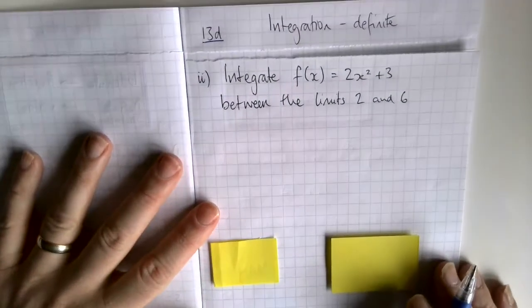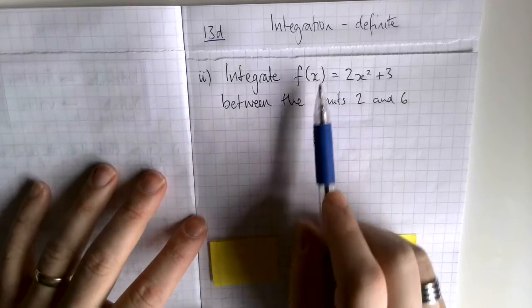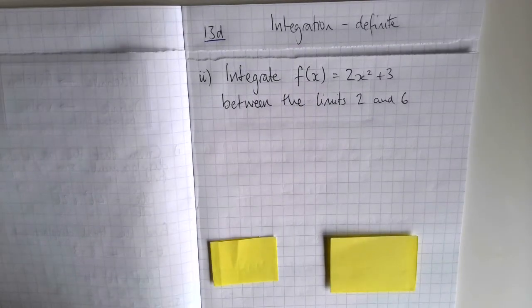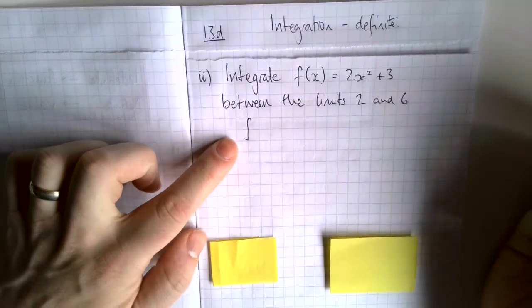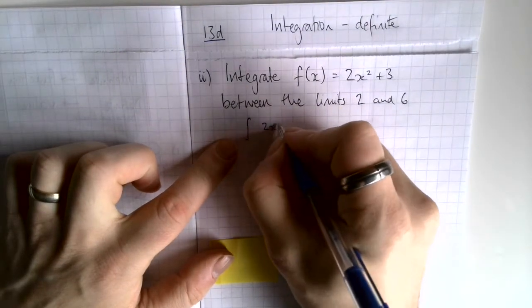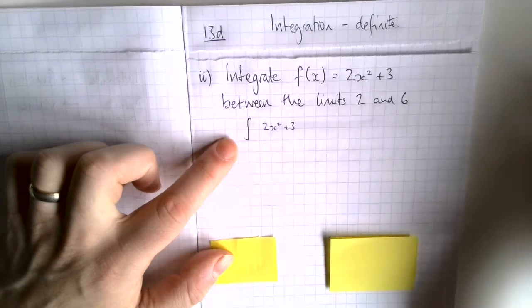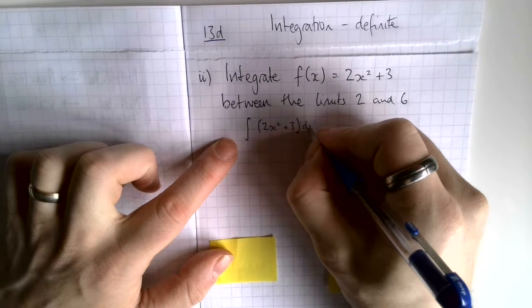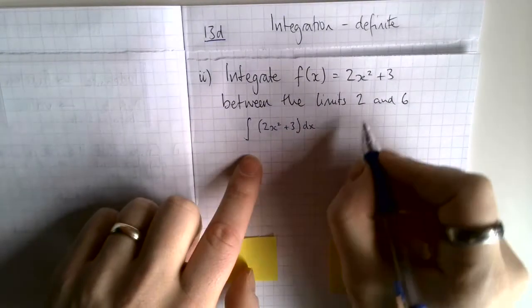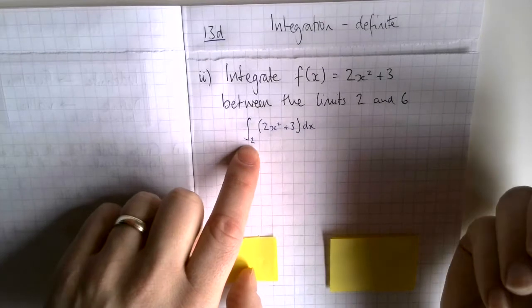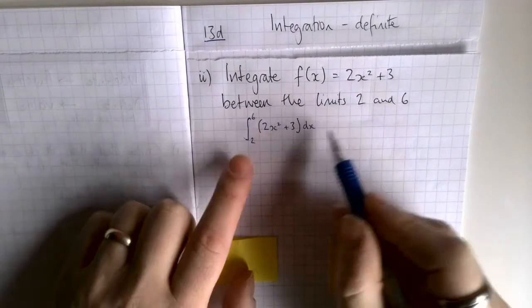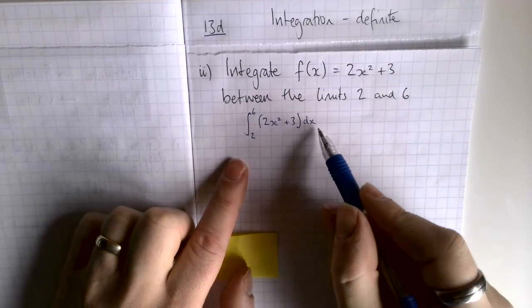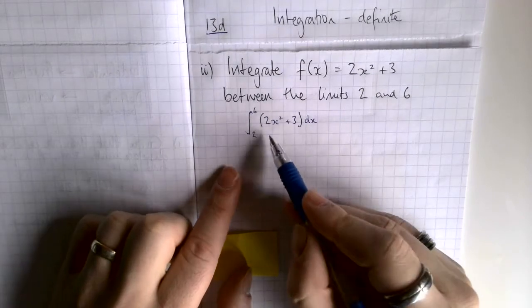Here's another one: integrate the function 2x squared plus 3 between the limits of 2 and 6. This time I'll show you the standard layout. We write the integral symbol, then 2x squared plus 3, integrating with respect to x, with the lower limit 2 at the bottom and the upper limit 6 at the top. That's the first step.